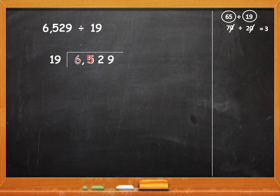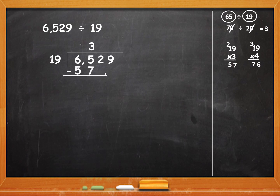To cross check, we will write 19 into 3: 3 nines are 27, carry over 2, 3 ones are 3 plus 2 is 57. It's less than 65. We will check 19 into 4 also: 4 nines are 36, carry over 3, 4 ones are 4 plus 3 is 76. 76 is more than 65, so it's not 19 into 4. It is 19 into 3. Write 3. 19 threes are 57. When you subtract, the remainder is 8. Bring down 2.